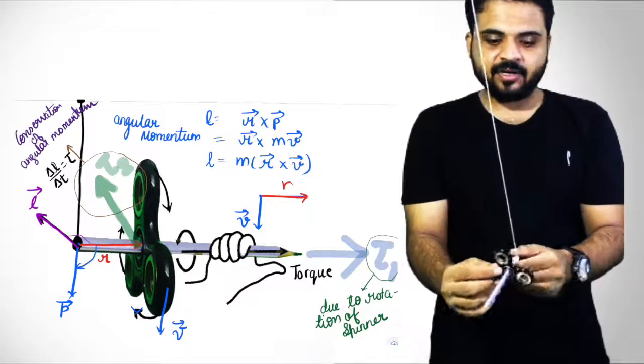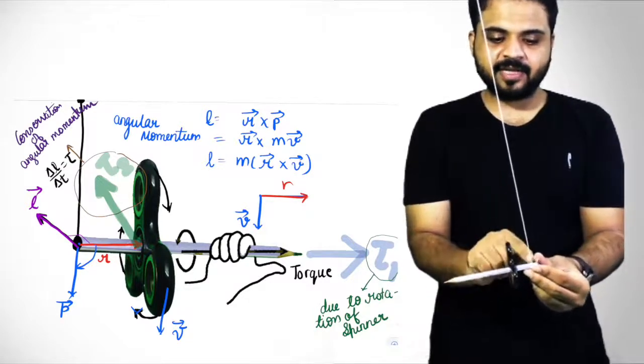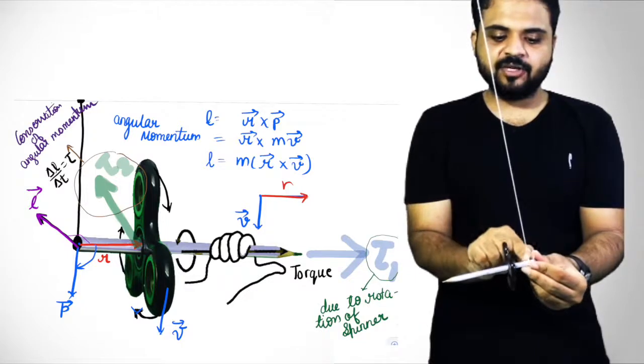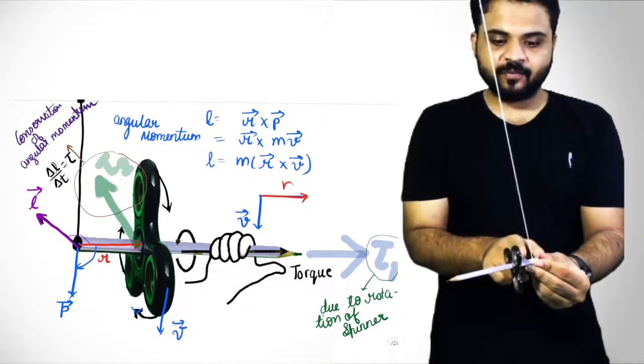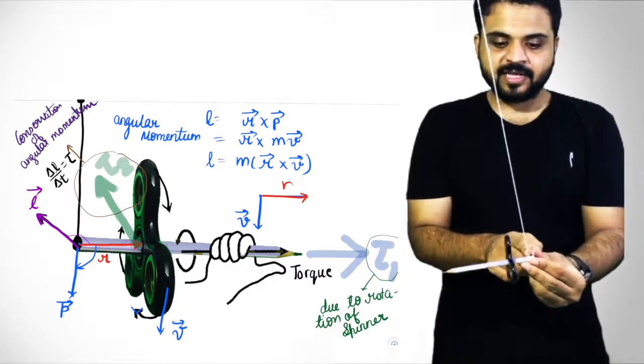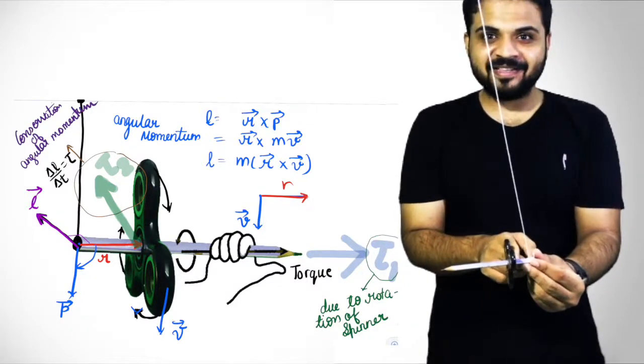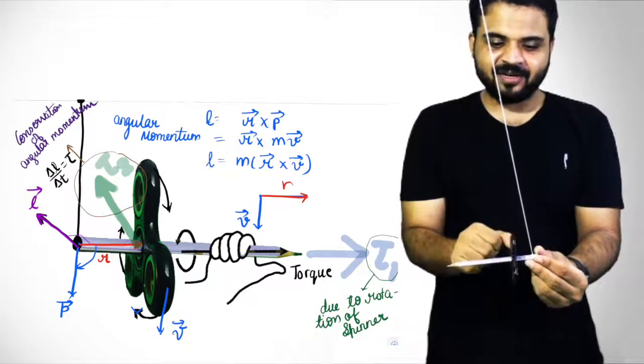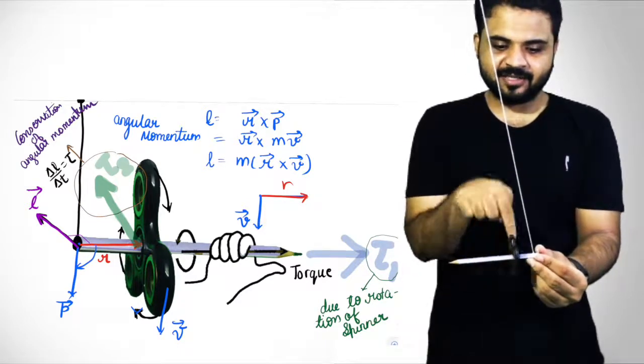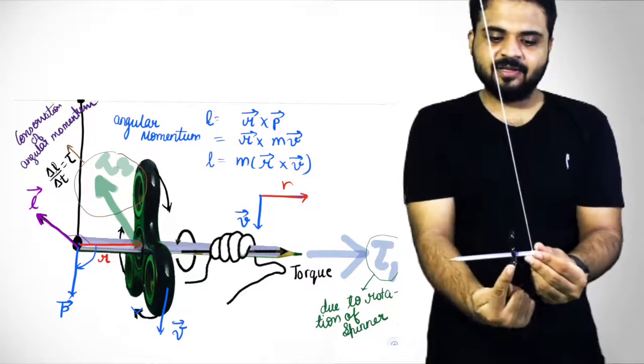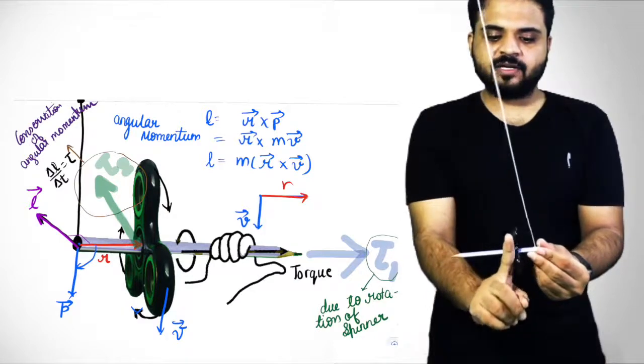That is, r here is the radius from point of suspension to the point of contact. Then this r and p, that is linear momentum, and linear momentum will always be in the direction of velocity.